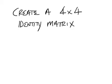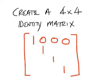Create a 4 by 4 identity matrix. Your answer on this should have a diagonal of 1's like this and then of course everything else is filled in with 0's.